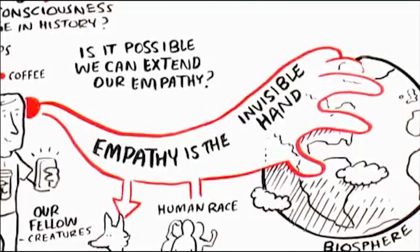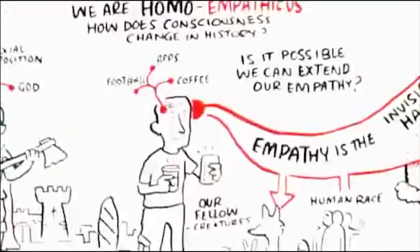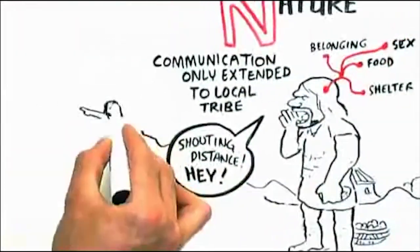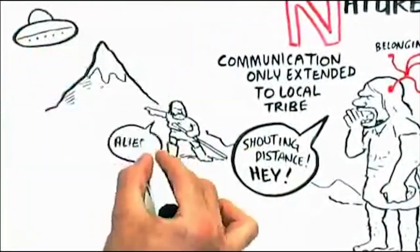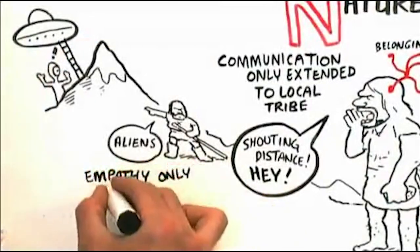With forager hunter societies, communication only extended to the local tribe and shouting distance. Everyone over in the next mountain was the alien other. So empathy only extended to blood ties.